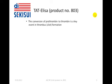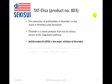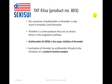The conversion of prothrombin to thrombin is a key event in thrombus formation. Thrombin is a serine protease that acts on various factors in the coagulation pathway and is a major player in thrombus formation. Antithrombin-3, AT3, is the major inhibitor of thrombin, and inactivation of thrombin by antithrombin-3 leads to the formation of a covalent inactive complex.